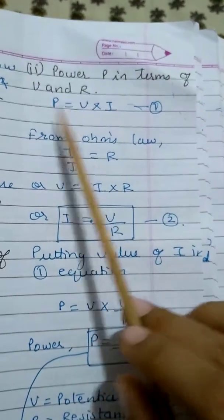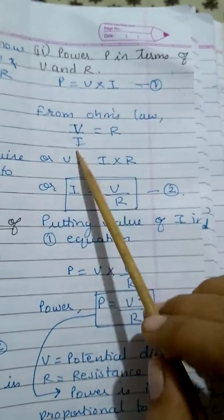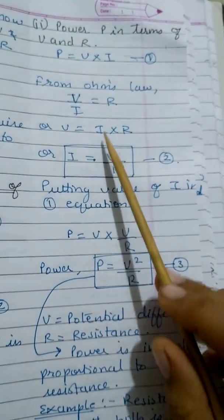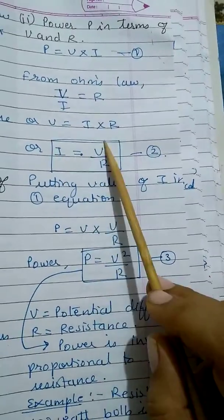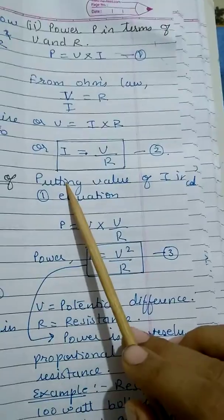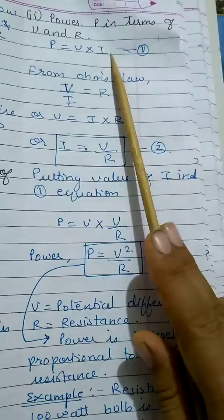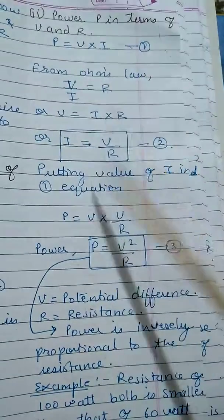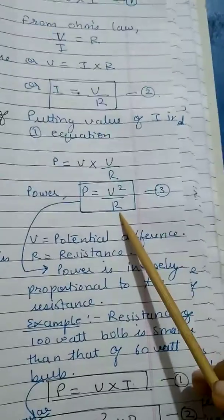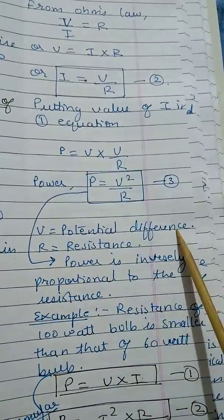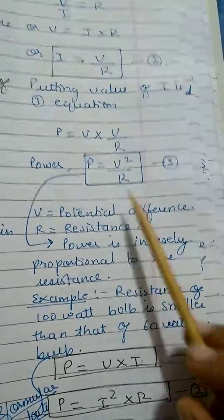Next, power P in terms of V and R: P equals V×I. From Ohm's law, V equals IR, so I equals V upon R. Putting this value of I into equation one, P equals V×(V/R), so P equals V²/R, where V is potential difference and R is resistance.